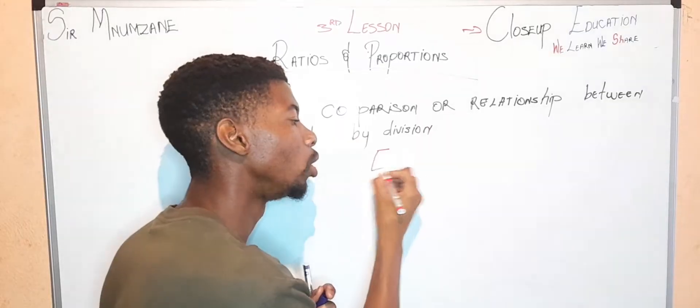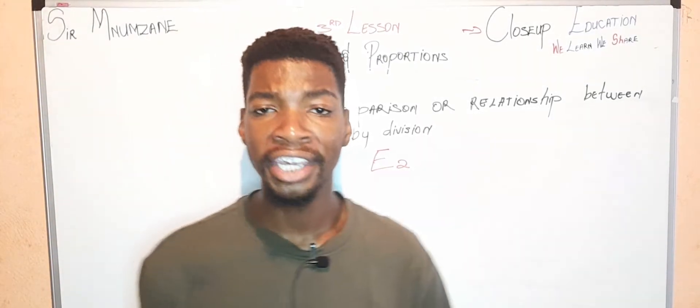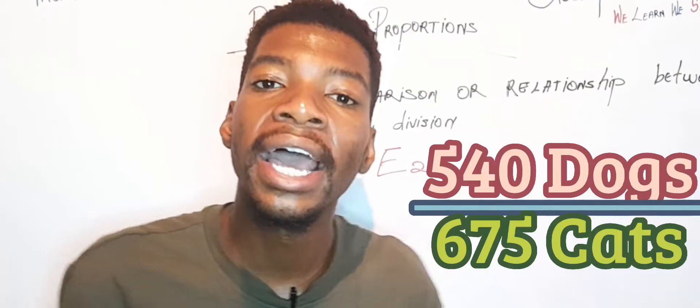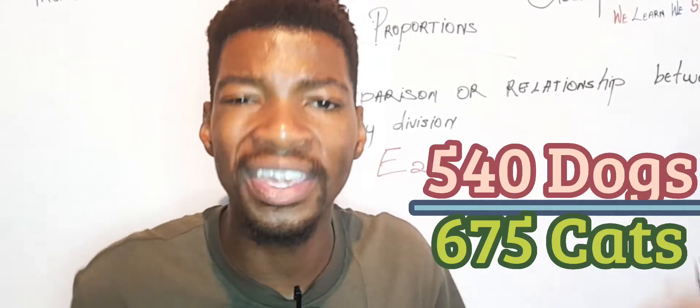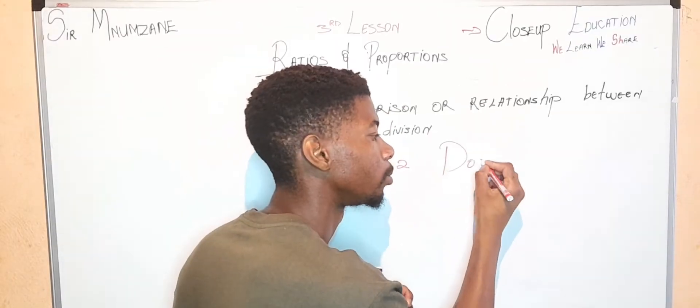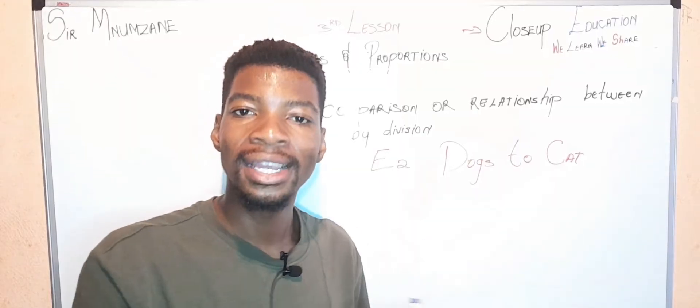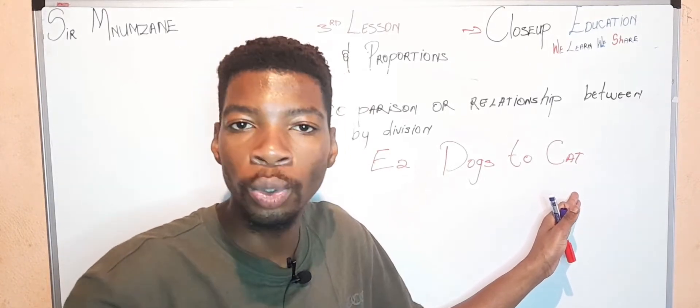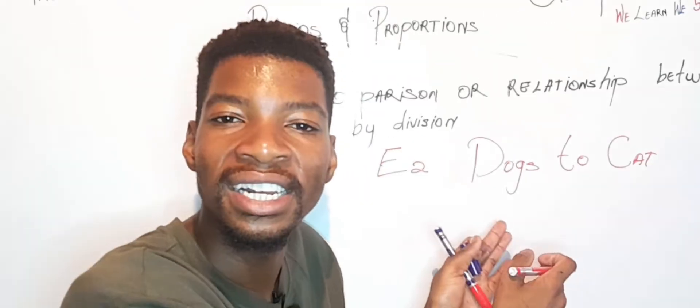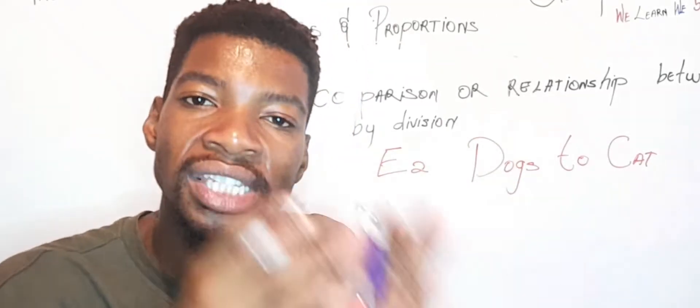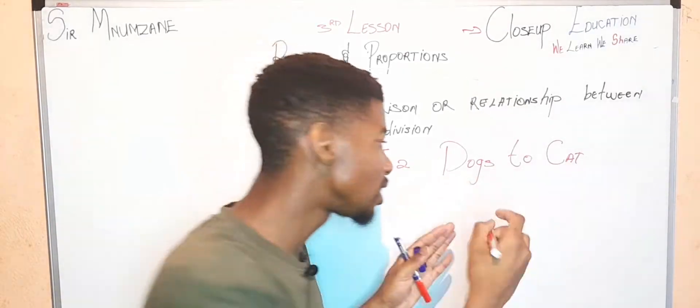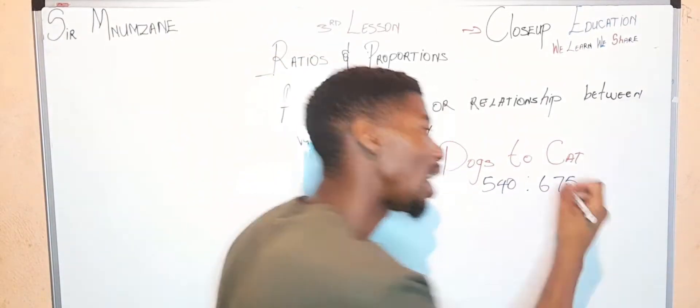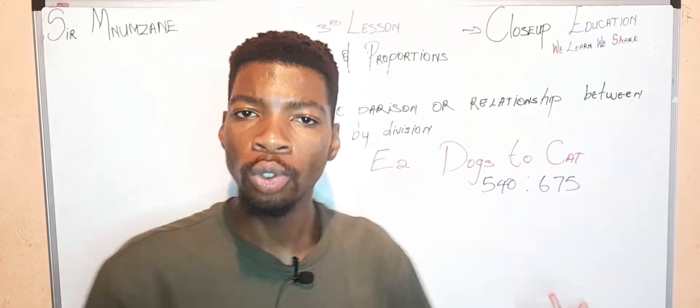Example number two: Let's say you are in a cage with 540 dogs and 675 cats. Let's write it down: dogs to cats. You first write the first object from the statement and the second one from the statement. So we have 540:675. The question says simplify these ratios.